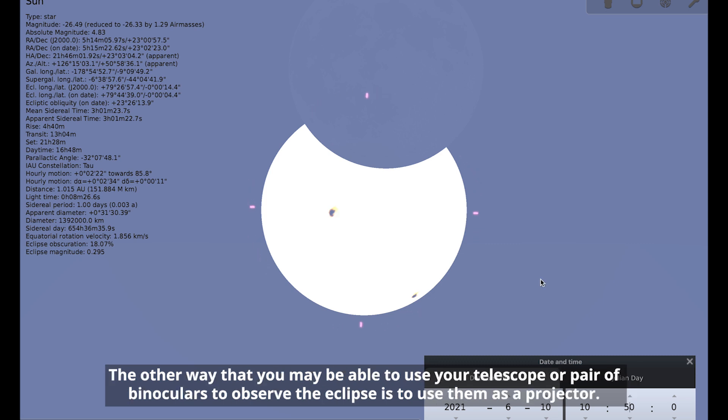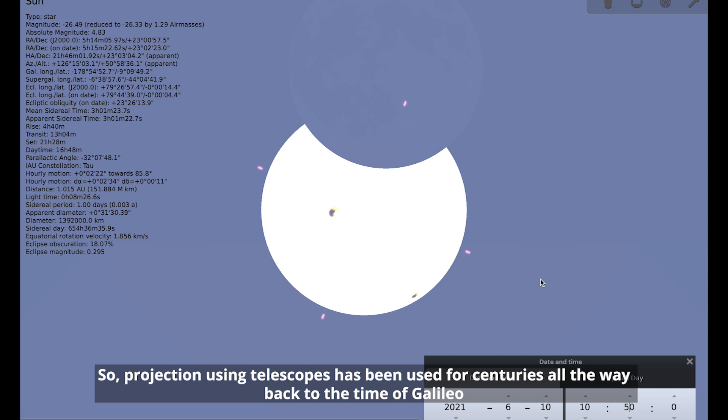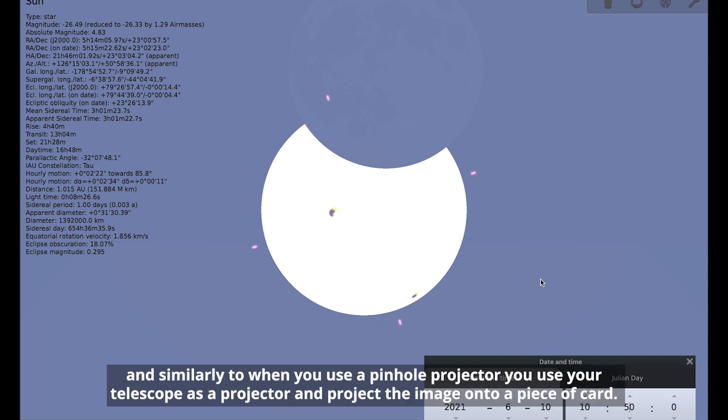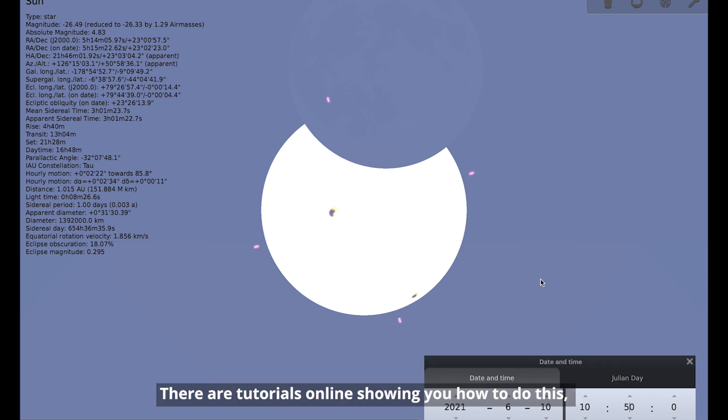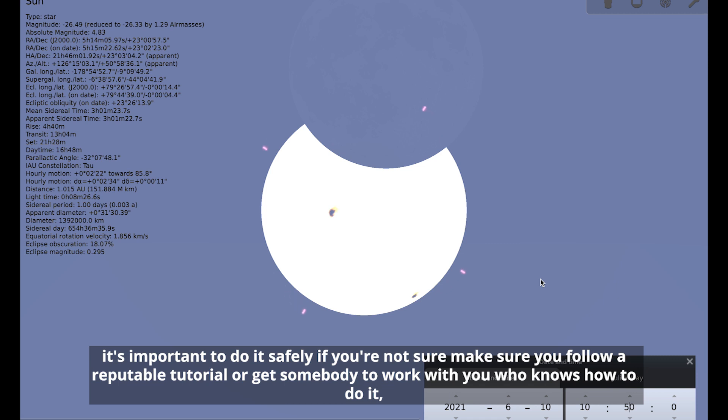So there's some of the things that you might be able to see if you have a solar filter for your telescope. The other way that you may be able to use your telescope or pair of binoculars to observe the eclipse is to use them as a projector. So projection using telescopes has been used for centuries all the way back to the time of Galileo. And similarly to when you use a pinhole projector, you use your telescope as a projector and project the image onto a piece of card. There are tutorials online showing you how to do this. It's important to do it safely.